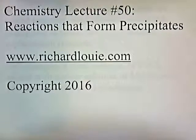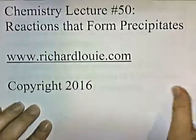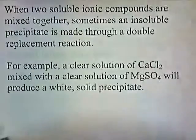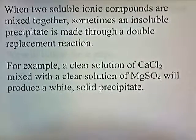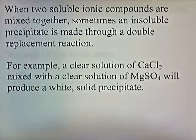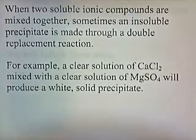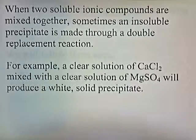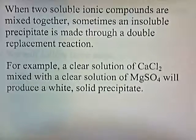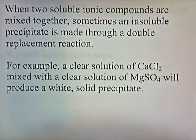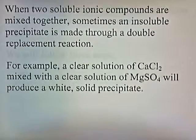Chemistry Lecture Number 50: Reactions that Form Precipitates. When two soluble ionic compounds are mixed together, sometimes an insoluble precipitate is made through a double displacement reaction. For example, a clear solution of CaCl2 mixed with a clear solution of MgSO4 will produce a white solid precipitate.